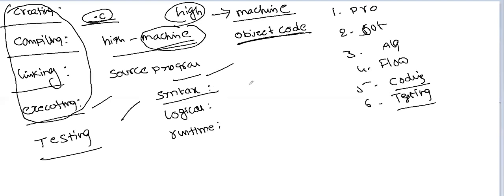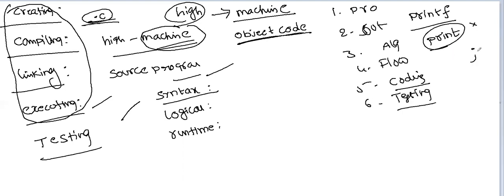Syntax error means errors in the syntax of the program. The language developer fixed the syntax rules — we have to use only those particular statements. For example, if you want to use a printf statement you must use printf; if you use only 'print' it gives an error. Also, each and every line must end with a semicolon — if you don't include a semicolon, that is an error. If you are not following the rules of the language, those are called syntax errors.